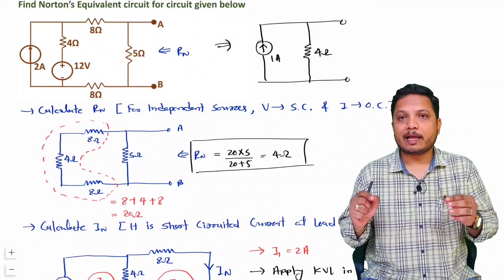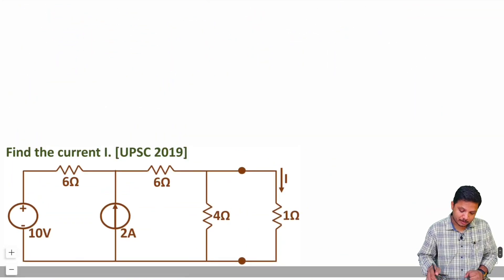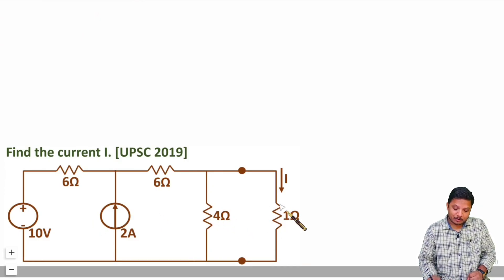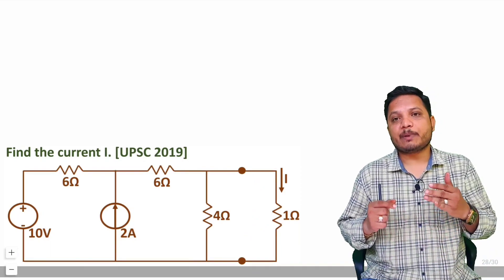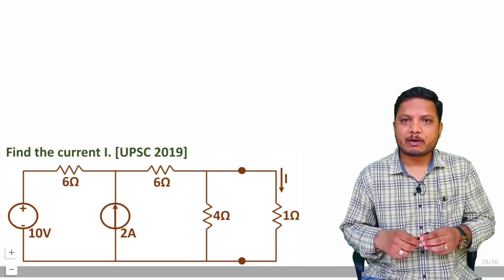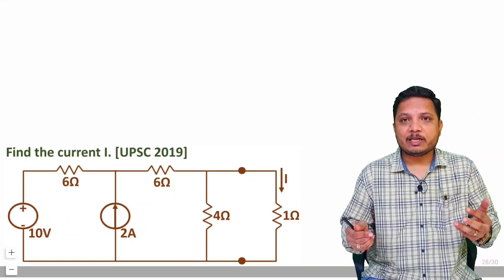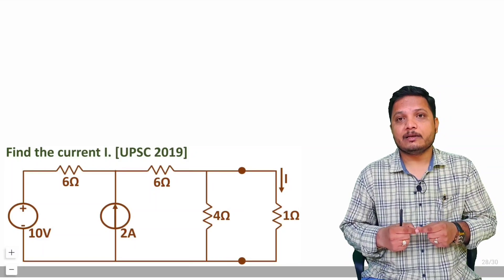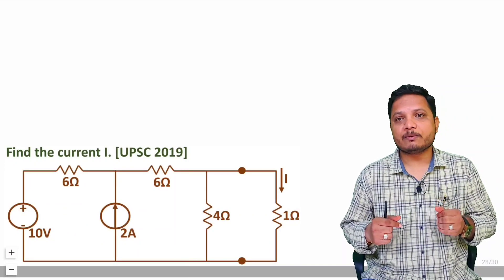I hope you've understood how to find Rn and IN. Now I'd like to give you one practice question — write your answer in the comment box. For this network, find current I by treating part of the circuit as a Norton's equivalent. You can solve it by many methods, but practice using Norton's theorem so that when you solve problems in competitive examinations you'll find it easier. Let me know in the comments whether you get the correct answer. Thank you so much for watching this video.